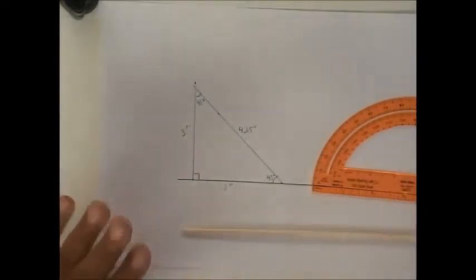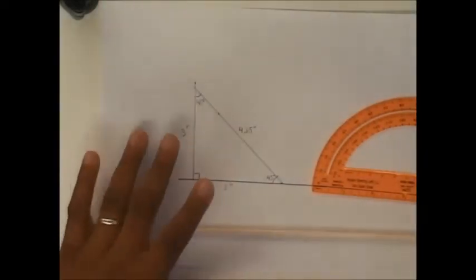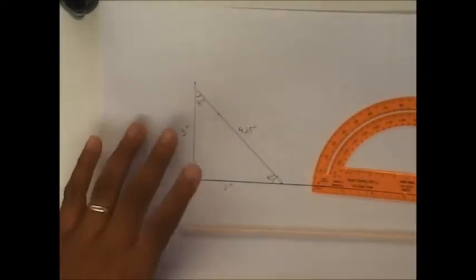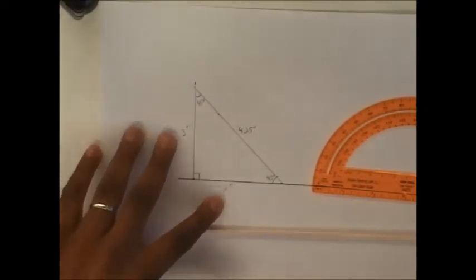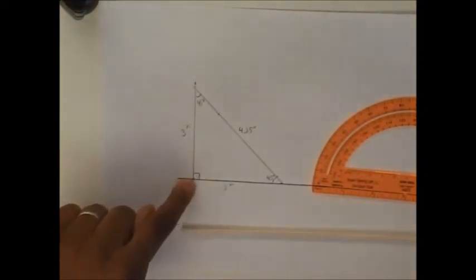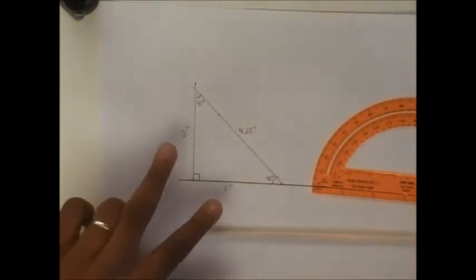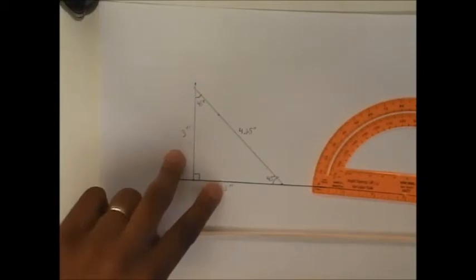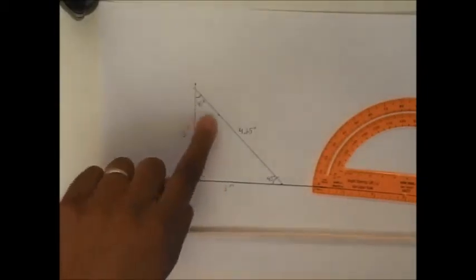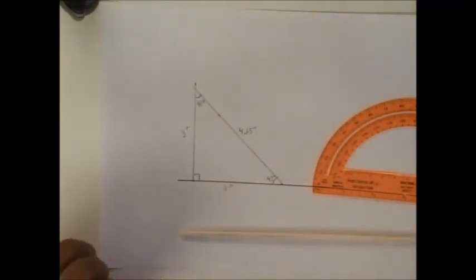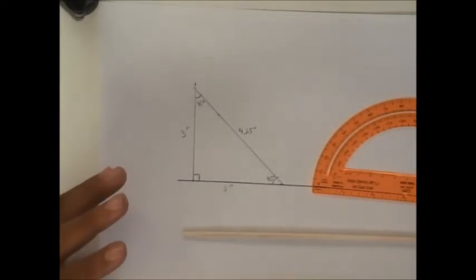So this is a right triangle, the 90-45-45. The two sides that are connected to the 90-degree angle are the same length, and then you have your hypotenuse. So what I need is two 3-inch pieces, and for my hypotenuse, I need a piece that is 4.25 inches long.